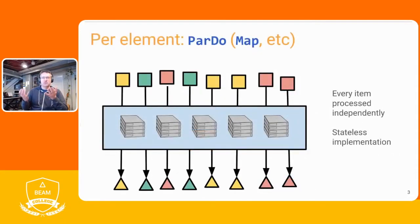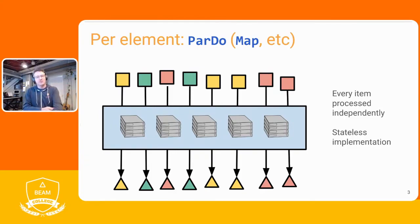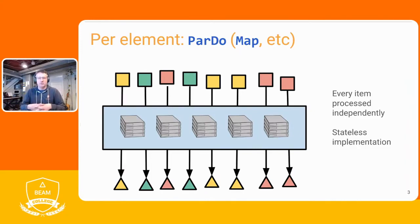There are basically two fundamental operations. The first is ParDo — parallel do. The way it fits in with state and timers is you first understand that this is doing the same thing to every element. This is embarrassingly parallel; it's obvious how you can distribute this across an unlimited number of machines. It's not always map — sometimes it's filter, or flat map — but there's no mystery how to implement this, and you don't have to store any state.